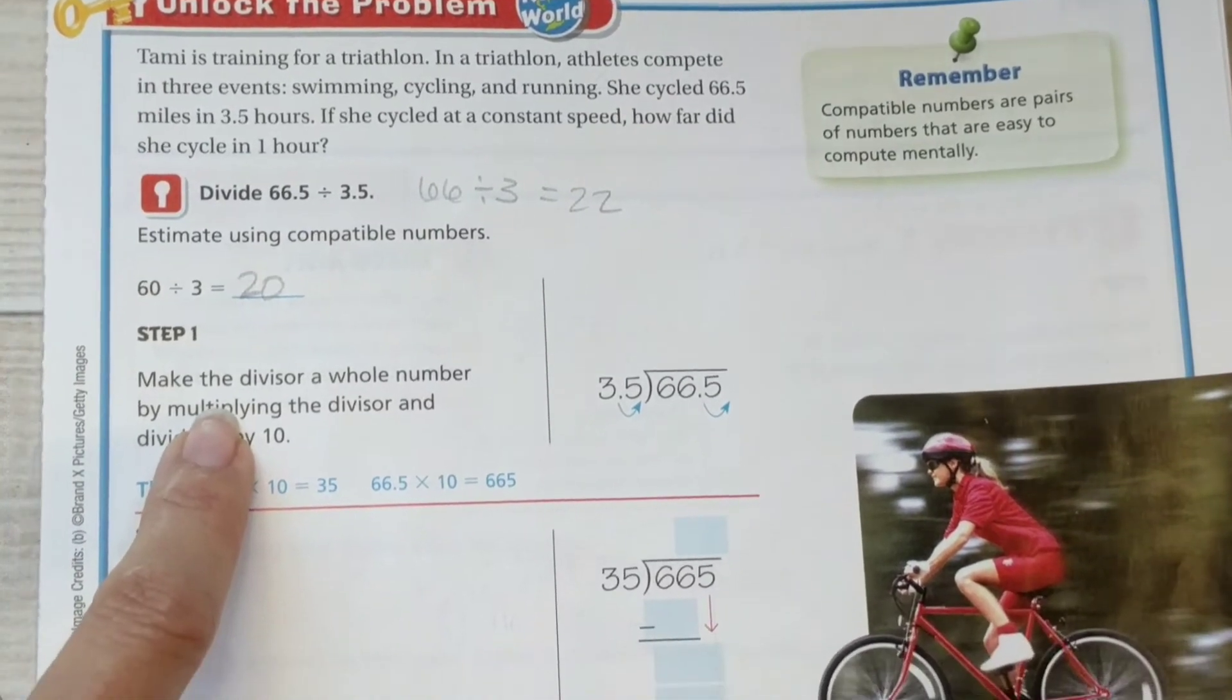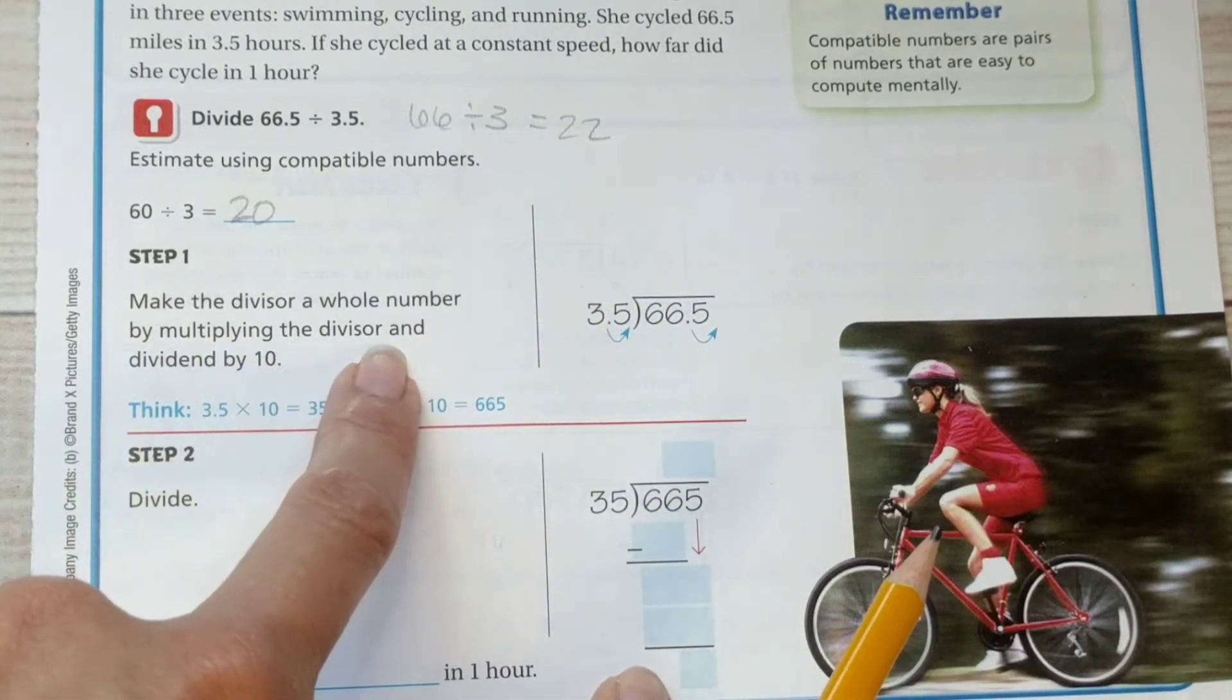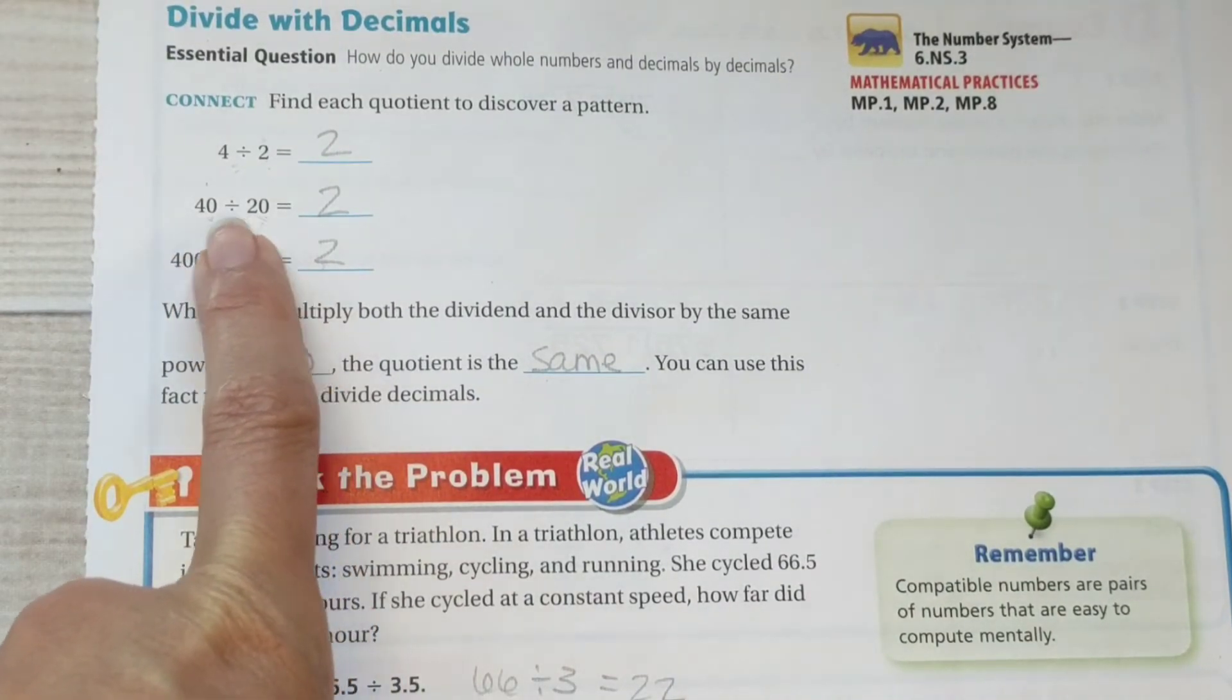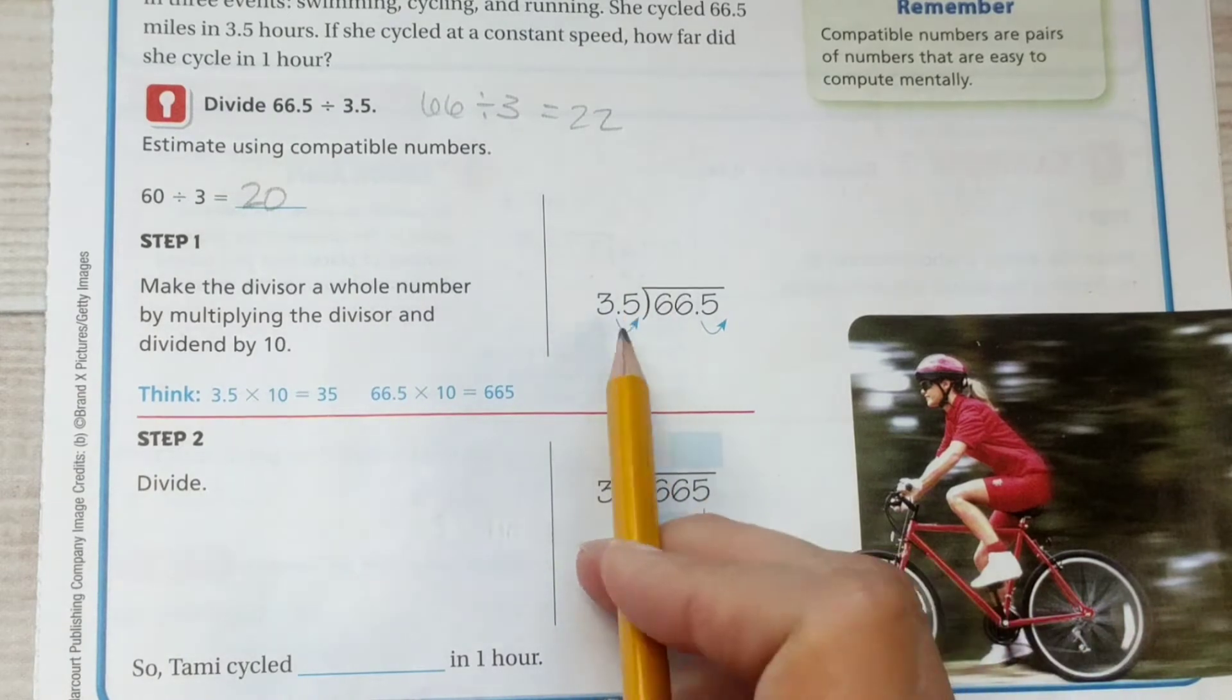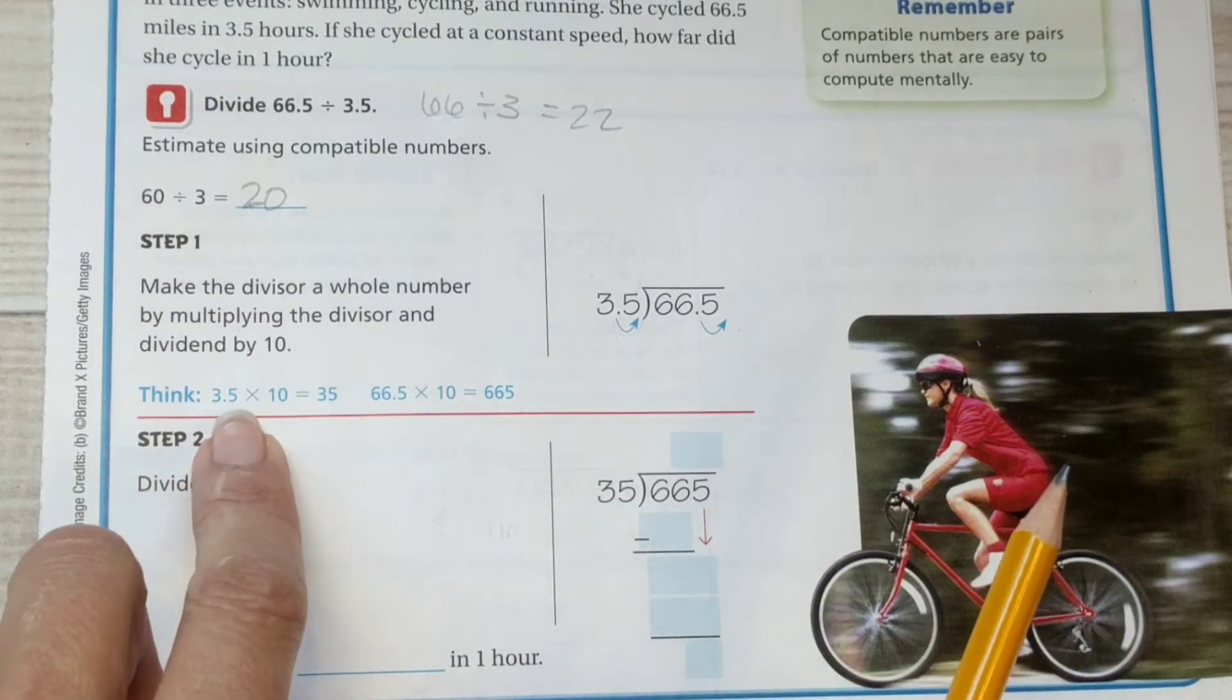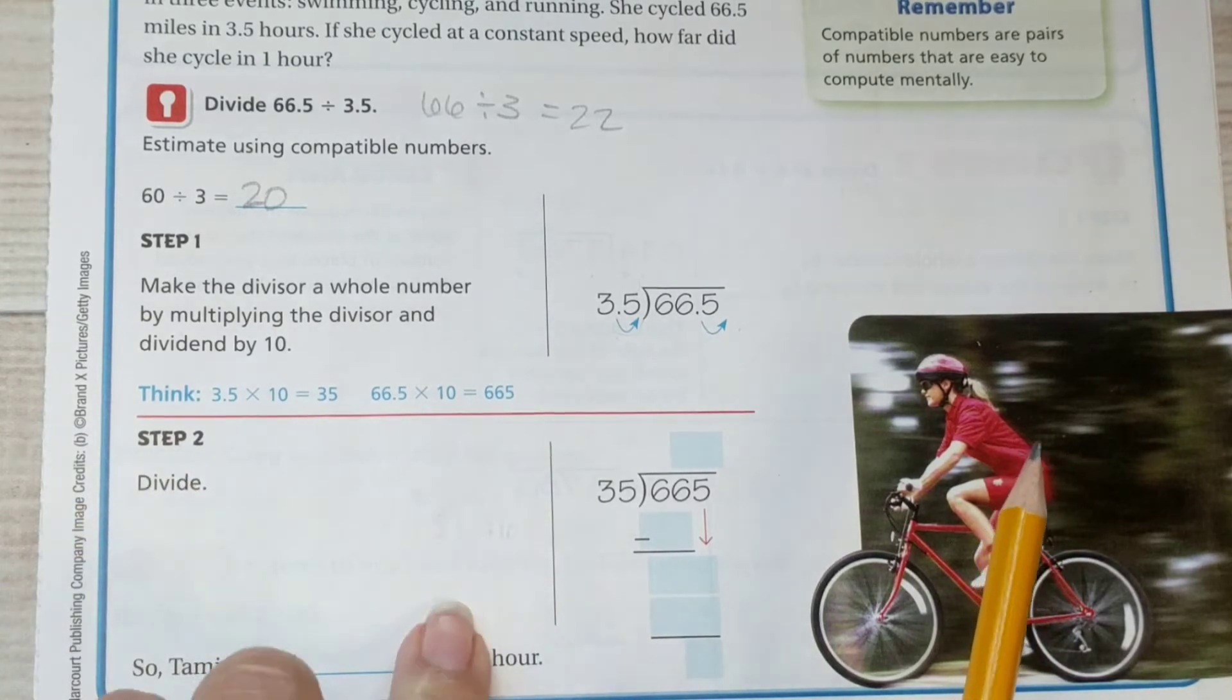Make the divisor a whole number. With our divisor, we don't leave it in decimal form. We make it a whole number by multiplying the divisor and the dividend by 10. That's why we did this little exercise up here. If you have the same number of zeros behind, it doesn't affect the outcome. We're going to multiply both the divisor and the dividend by 10 and get rid of that decimal in the divisor. So 3.5 times 10 is 35, and 66.5 times 10 is 665.